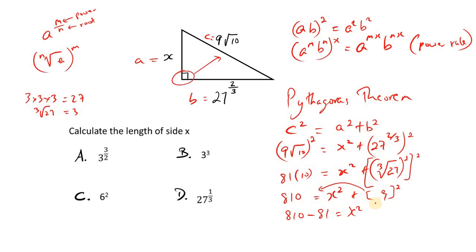In fact, what we're really doing is subtracting 81 from both sides. So we subtract 9 squared from this side, and we subtract 9 squared from this side as well. Okay, so this cancels out in other words, and we are left with x squared on this side. And so we say 810 minus 81. Okay, good.